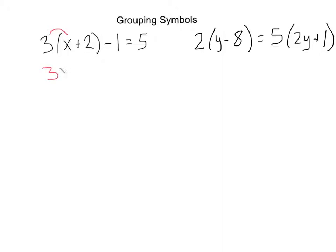3 times x is 3x plus 3 times 2 is 6. So we go plus 6 minus 1 is still here, equals 5. The next thing you do right after you distribute is always check if you can combine like terms. Here we have this 6 minus 1. Those can combine to give us a 5. We'll still have this 3x in the front, and this is going to equal 5.